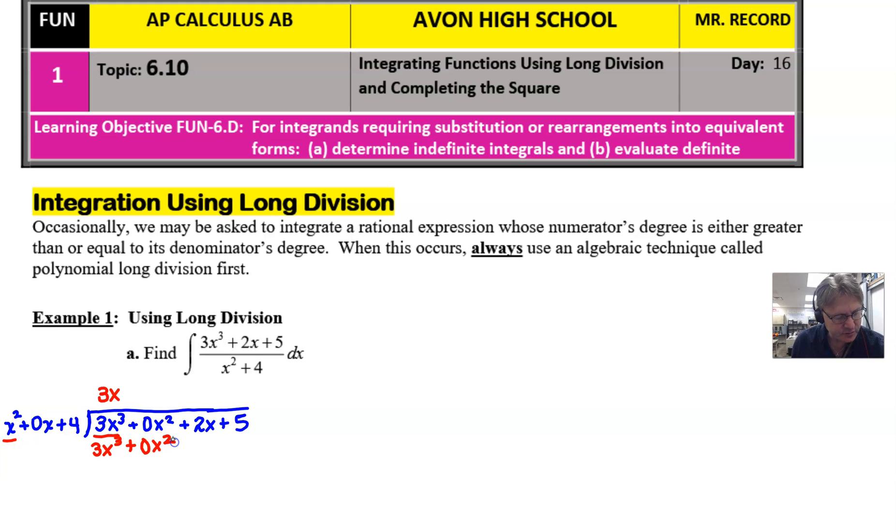Now, you're going to start by focusing only on the first term of each expression. And you just simply ask yourself, what is it that you would multiply this x squared term by to produce this 3x cubed? And the answer is 3 times x. You take that 3 times x and make sure that it multiplies by each term in this divisor, and you write the result underneath the expression you used as your dividend. In other words, what was in the box. So we have 3x cubed, which we'd expect, 0x squared, and then 12x. In typical long division fashion, you are now going to subtract those results from each other.